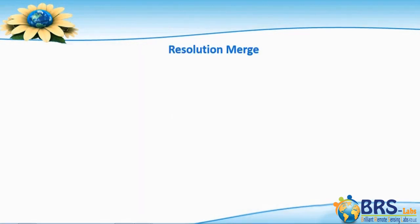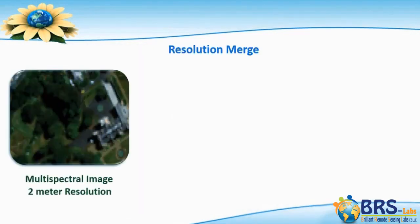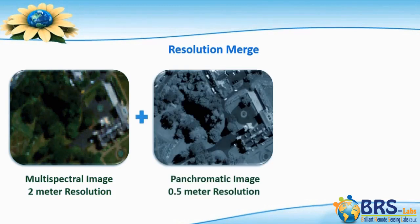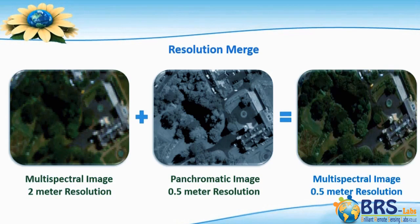This process merges two images of the same area. One of them is multispectral with medium resolution, but it's colored. The other one is panchromatic — it doesn't have colors, but it has high spatial resolution. The goal is to produce an image combining the previous two advantages, so it's colored, multispectral, and has high resolution.